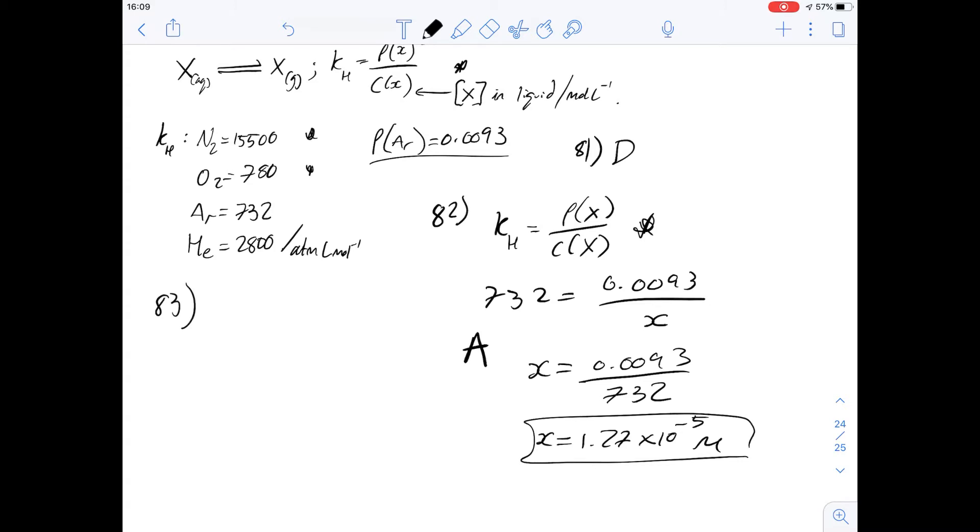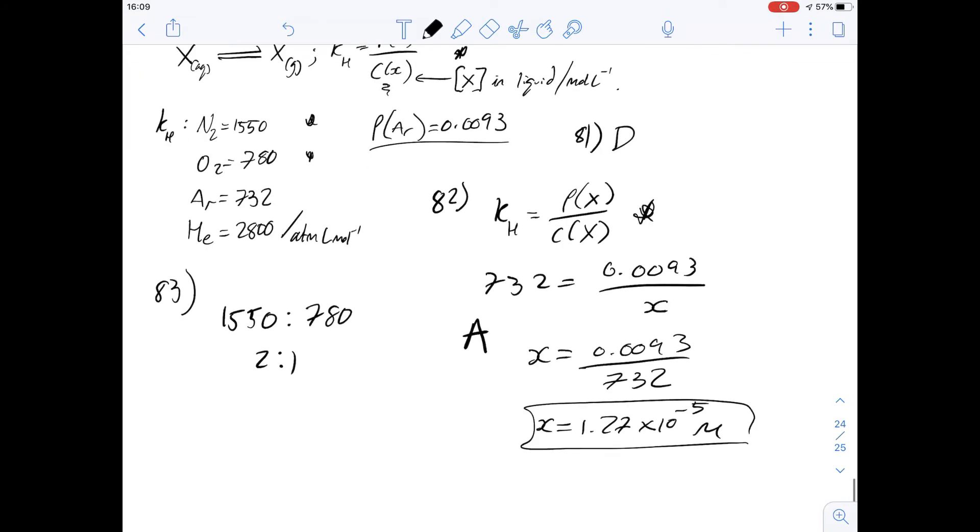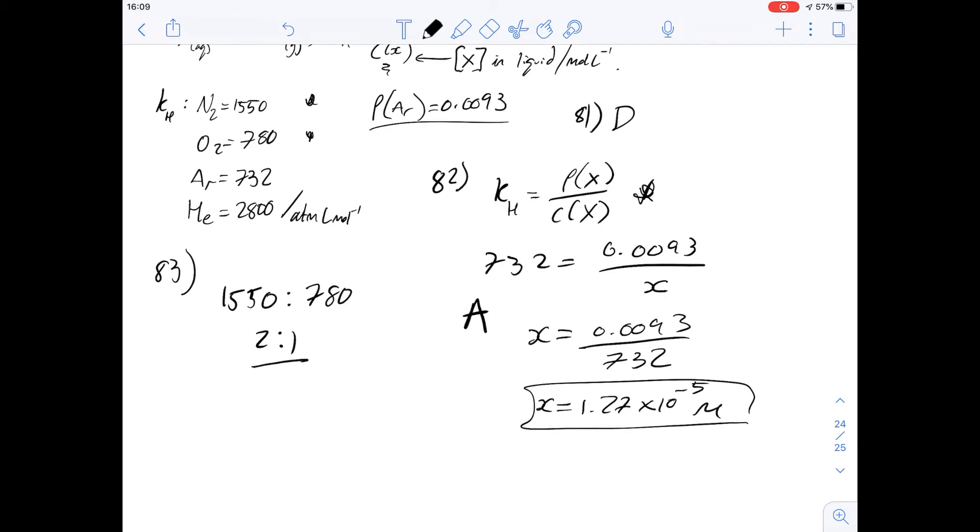Then for 83, it says that air contains a 4 to 1 ratio of nitrogen to oxygen. What's the ratio of the concentration of nitrogen to oxygen in blood plasma? Well, if we have a look again at the values of KH we're given, we have a ratio of 1550 to 780, and that's roughly a 2 to 1 ratio. And of course, the ratio is going to be inversely proportional to the concentration of each of them. And so we know that the ratios of the KH values are the same as the ratios of the concentrations. And because we've got a 2 to 1 ratio here, we know that the answer for 83 is therefore going to be C.